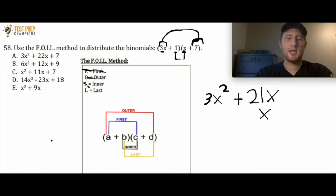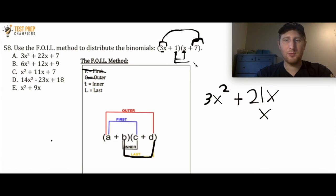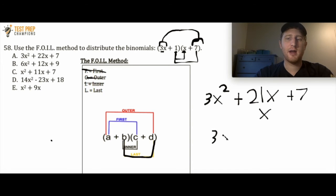The L stands for Last — multiplying the 1 and the 7. So 1 times 7 is simply 7. I've got 3x² + 21x + x + 7. Adding the x terms together gives 3x² + 22x + 7, which corresponds to answer choice A.